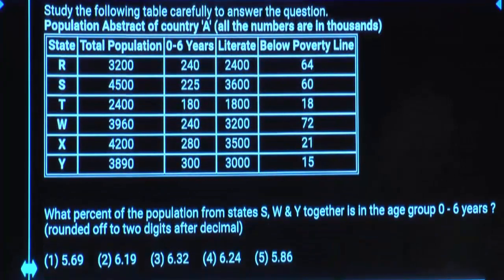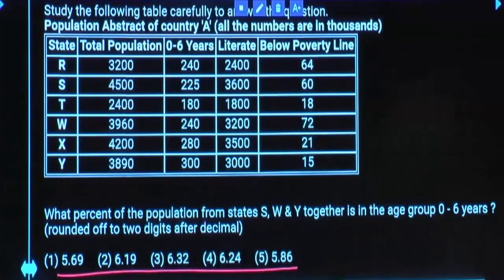First one: What percent of total population from states S, W, Y together is in the age group 0 to 6 years? Rounded off to 2 digits after decimal. Look at your options — first option and fifth option are very close, and second, third, fourth are very close to each other. Now, how to pick your answer? I will tell you the way first.